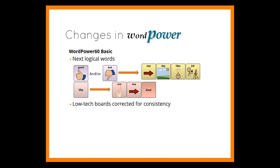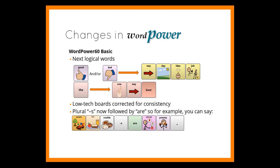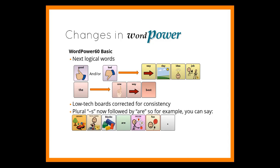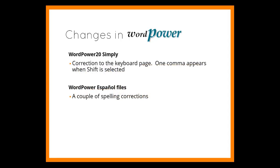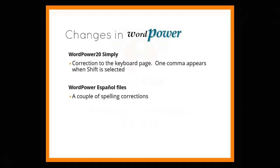Low-tech boards are corrected for consistency. The plural S now allows the word 'are' to follow, so that you can say things like 'cookies are yummy' or 'blocks are fun.' In WordPower 20 Simply, a correction to the keyboard page was made so that one comma appears rather than two. Also, a couple of spelling corrections were made in the Español files.